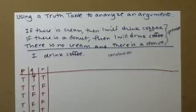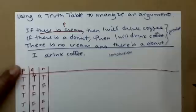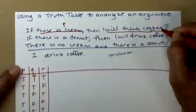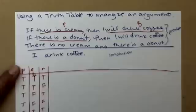First thing we need to do is do a translation. I need to get all of these statements condensed down to P's, Q's, and R's. So let's go ahead and assign these. How about if there is cream, that's going to be my P. And I will drink coffee can be my Q. And the only other statement I have in there is about a donut. So there is a donut can be my R.